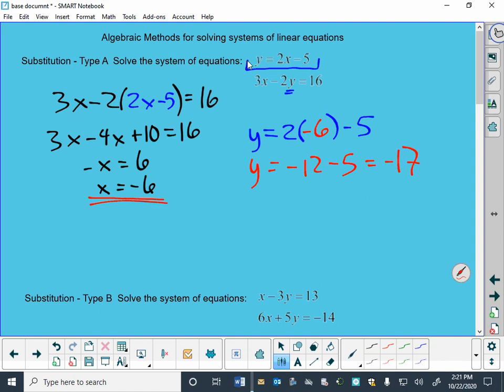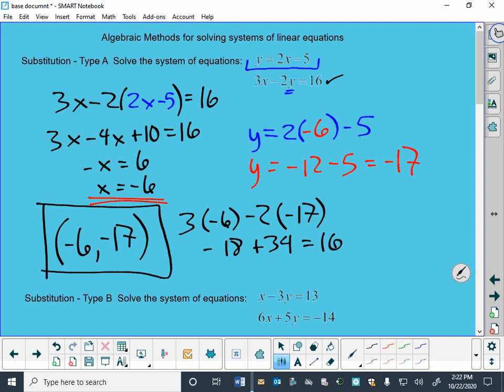I want to double check all my answers here. Let's see. I can check them in the second equation. If I do 3 times the negative 6 minus 2 times the negative 17 to see what I get, I get a negative 18 plus 34. And that is 16, which is what it was supposed to be. So, my answer is the point negative 6 comma negative 17. There is my first one.